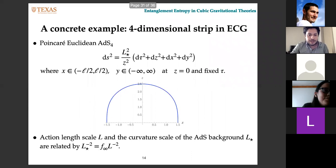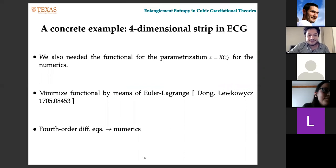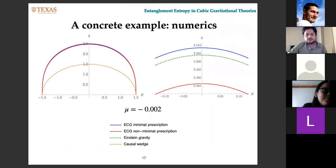We applied this to Einsteinian cubic gravity, a specific theory that has nice properties, in the setup of a strip in the Poincaré Euclidean AdS4. This is the metric that we considered. These are the equations. There are some differences, really complicated, so we had to use numerics to minimize them.